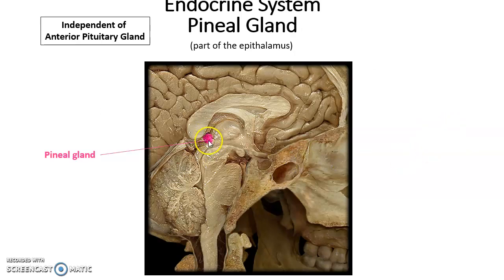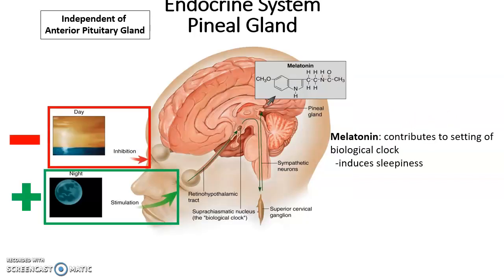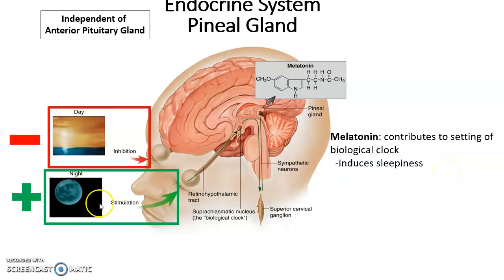Moving on to the pineal gland — it is found in the brain, specifically part of the epithalamus of the diencephalon. The pineal gland produces the hormone melatonin, which helps induce sleepiness. During the day, light detected by the eyes inhibits the release of melatonin. At night, the darkness — the lack of light — is a stimulus that triggers the pineal gland to produce melatonin, which goes to the hypothalamus and leads to the processes that cause us to become sleepy.